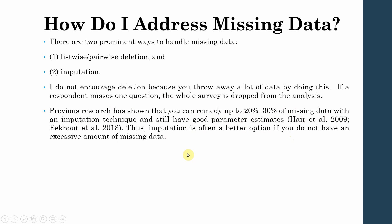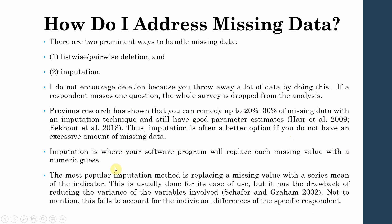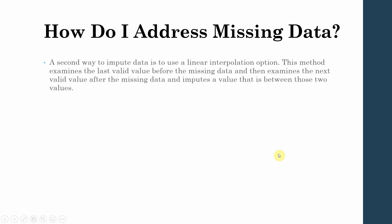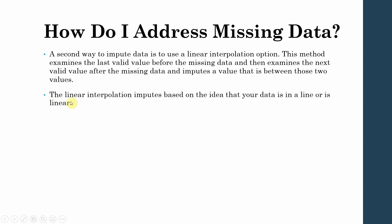Imputation is often a better option if you do not have an excessive amount of missing data. Imputation is where your software program replaces each missing value with a numeric guess. The most popular method is replacing a missing value with the series mean of the indicator — this is done for its ease of use, but it has the drawback of reducing the variance of the variables involved and fails to account for individual differences of specific respondents. A second method is linear interpolation, which examines the last valid value before the missing data and the next value after it, then imputes a value between those two.